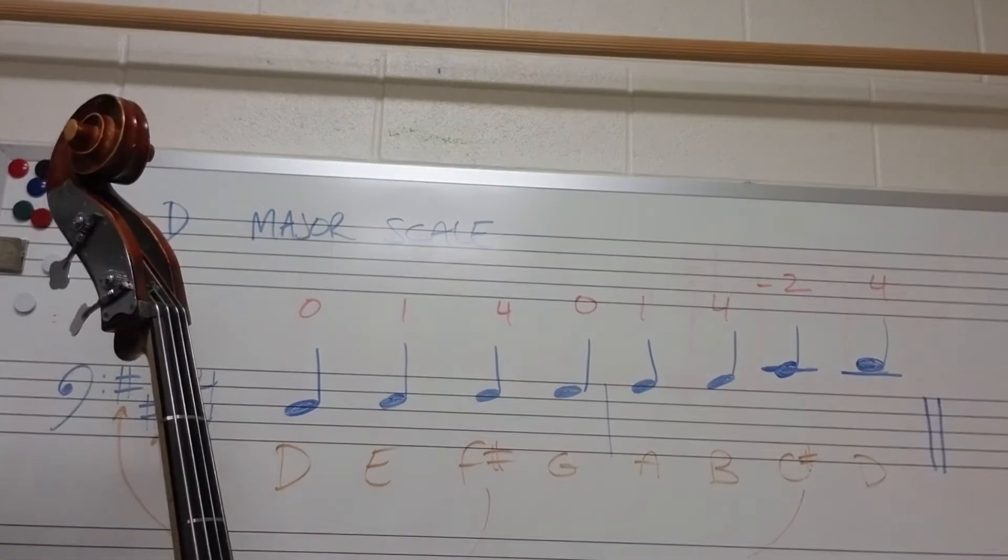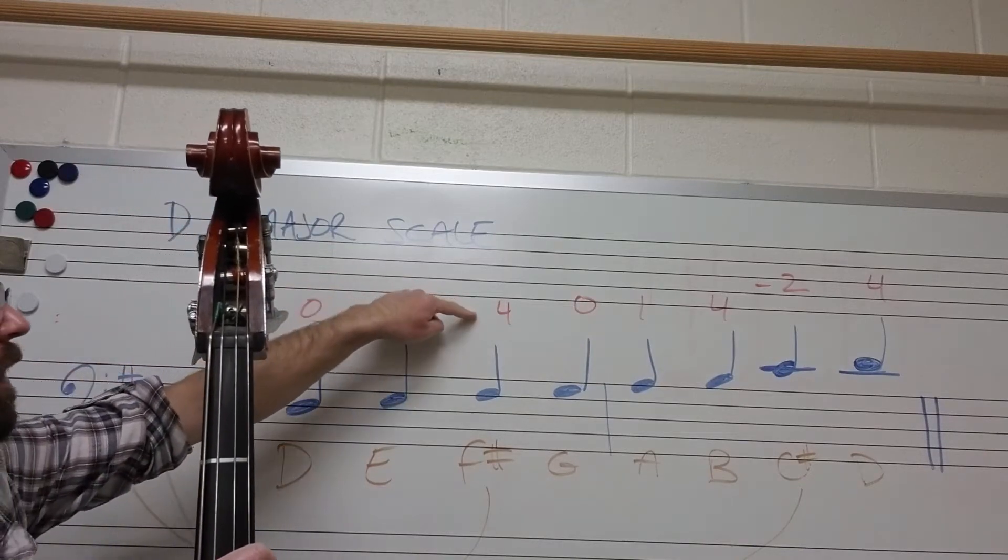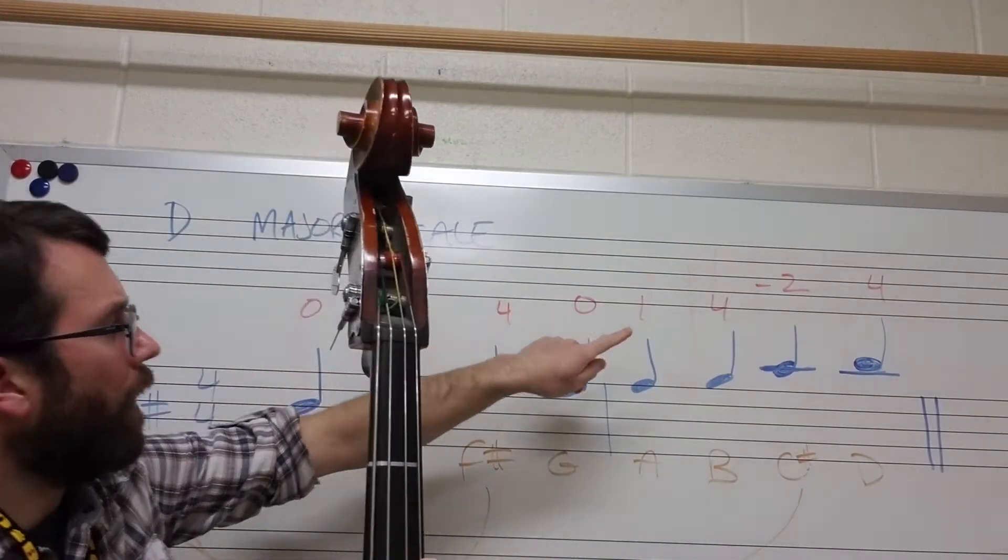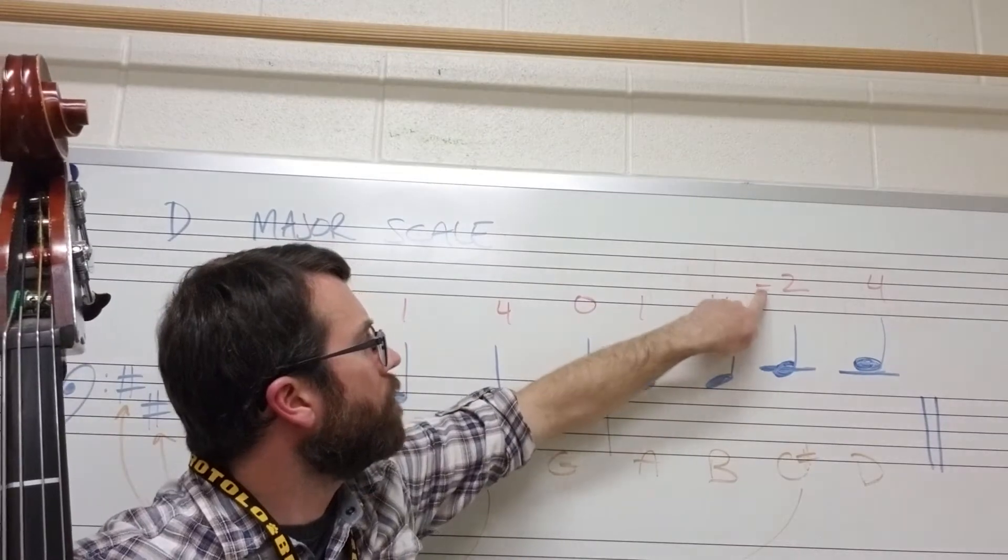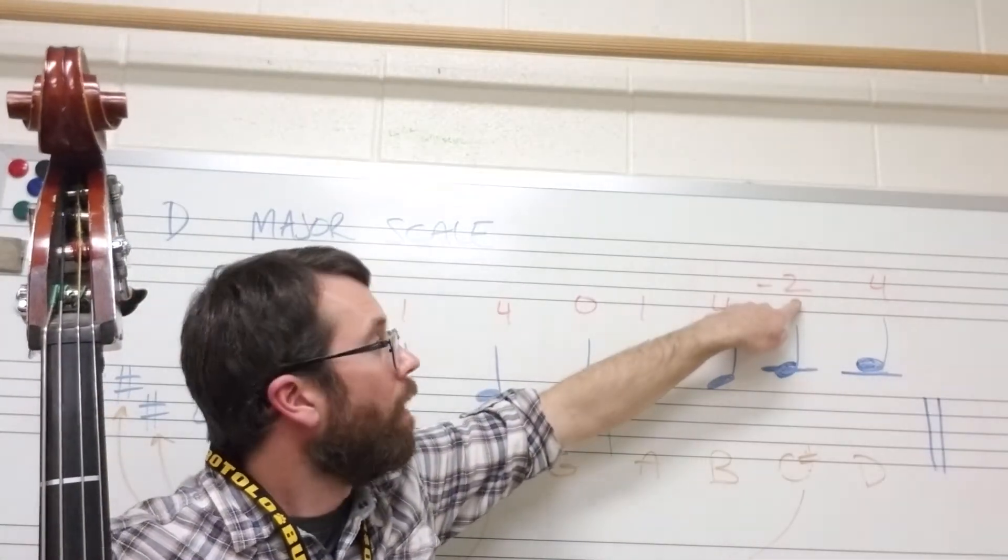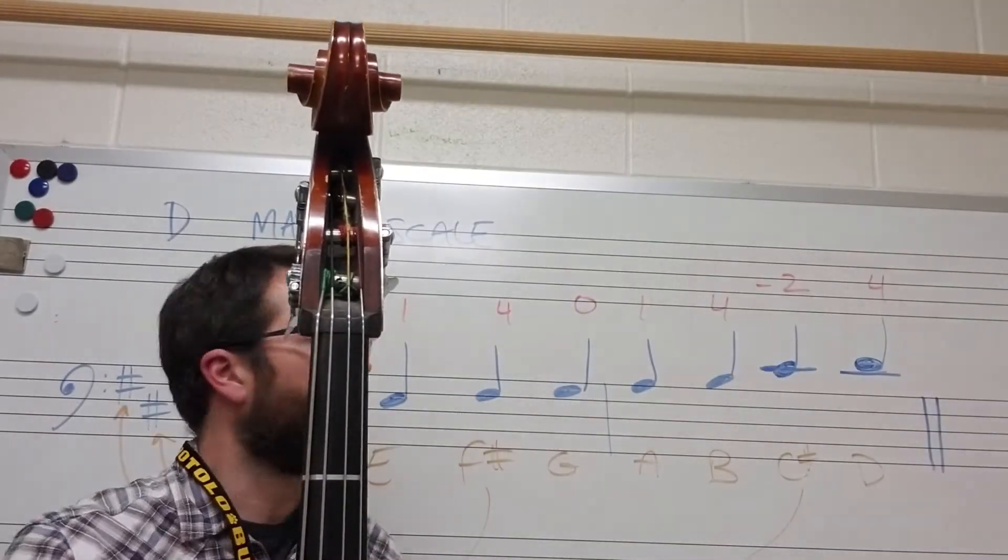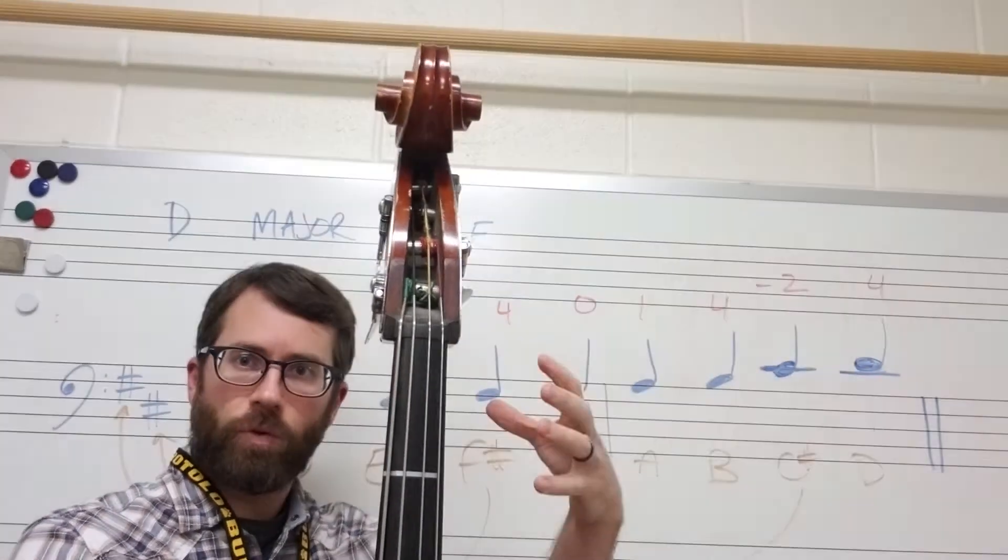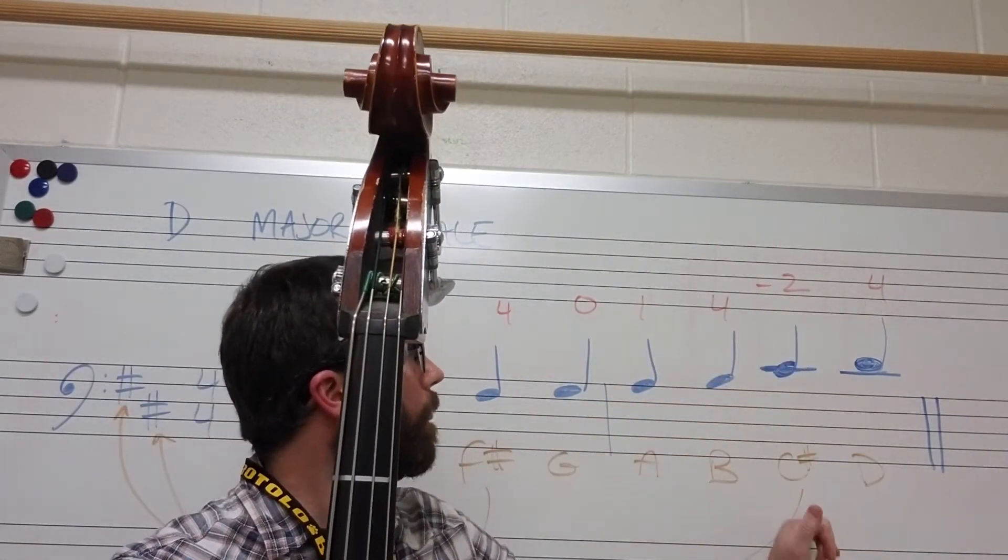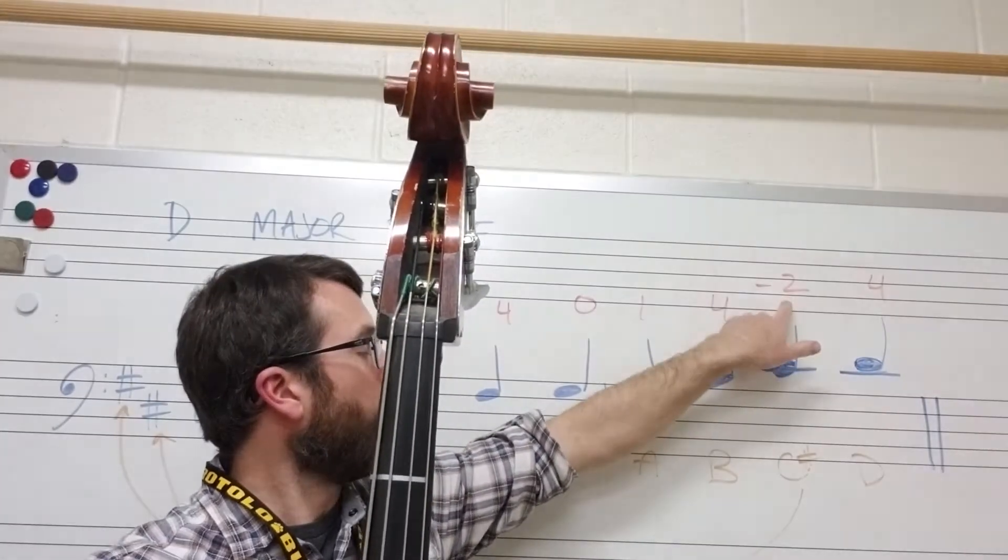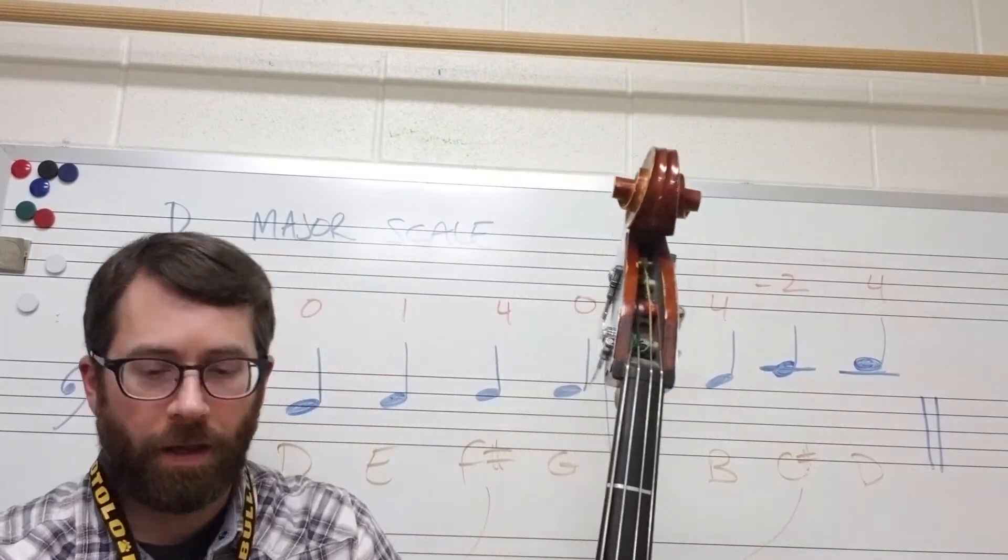Now, you notice also up above each note in the red, I've indicated a finger number. So this is just as a reminder. As we go further this way, you notice I have a dash. I don't know if you can see that very clearly, but there's a dash right there next to the two. What that dash means is shift. And so I'll show you what that looks like on the bass so that you have a visual too and you know what the term is. So the dash means shift and we play the C sharp with a second finger. And then the last note that we're going to play is a D with a fourth finger.